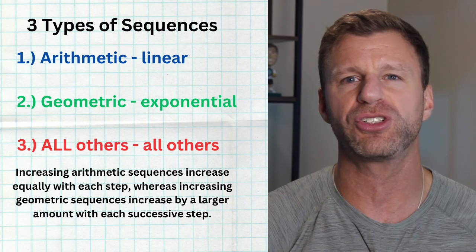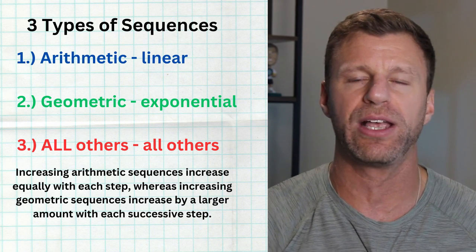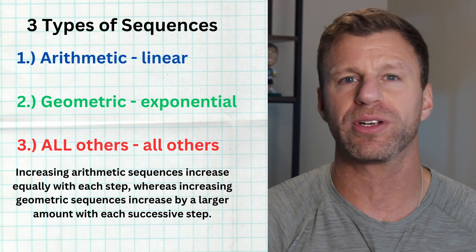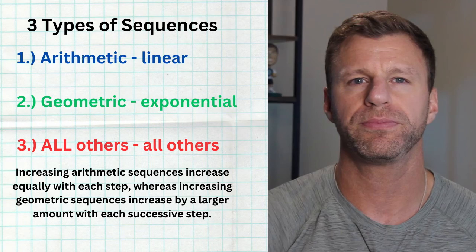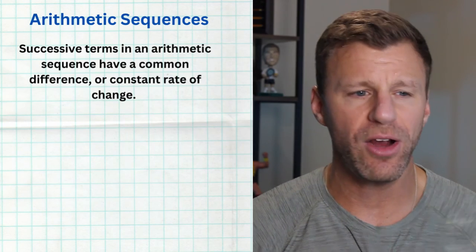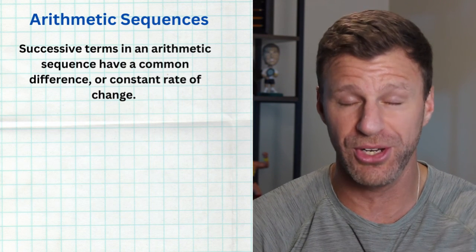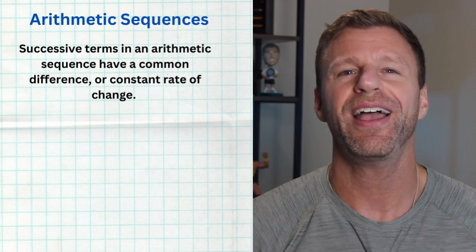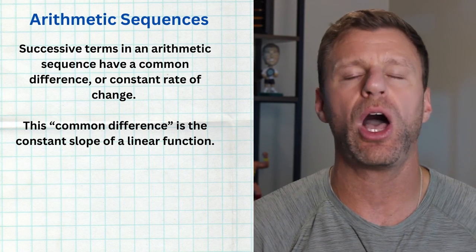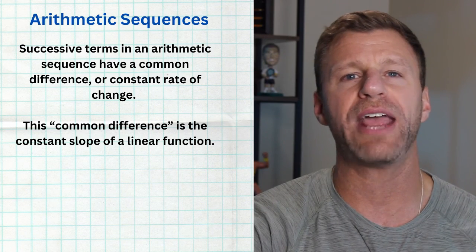Linear functions increase or decrease at a constant rate — that's exactly what an arithmetic sequence does. Exponential functions increase or decrease proportionally — that's exactly what a geometric sequence does. Now let's focus on arithmetic sequences for the rest of this part. In an arithmetic sequence, successive terms have a common difference — the same difference between every consecutive pair of terms. We call this common difference d, and it's very similar to the slope of a linear function.